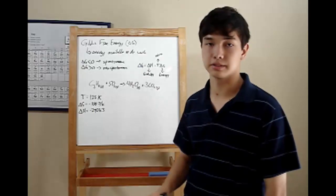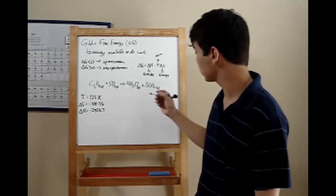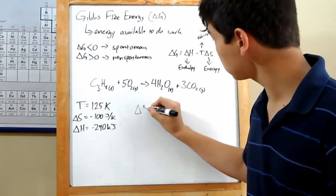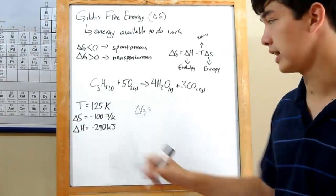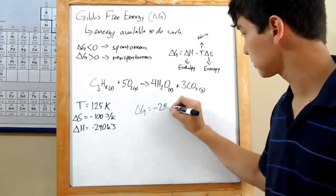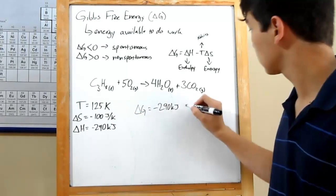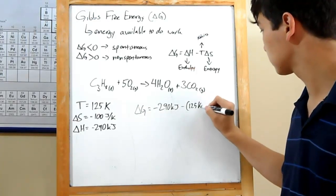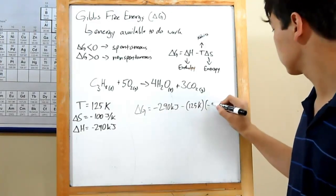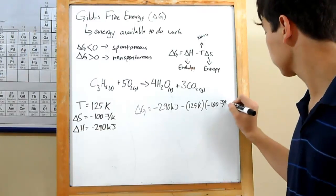You'll be given these values usually, so you can just plug them into the equation. Delta G equals delta H, negative 290 kilojoules, minus T, we have 125 kelvins, times delta S, negative 100 joules per kelvin.